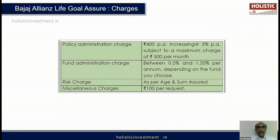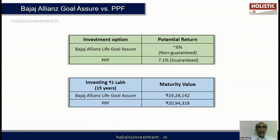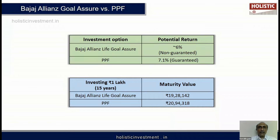We can analyze this policy further by comparing it with other investment options. First, let us take a conservative option: PPF. PPF gives you a 7.1% guaranteed return, whereas Bajaj Alliance Life Goal Assure gives less than 6% - and even that is not guaranteed. If the same money is invested in PPF, you get a maturity value of 20.94 lakhs guaranteed - close to 1.5 lakhs higher than the maturity value from Bajaj Alliance, and without taking any risk.